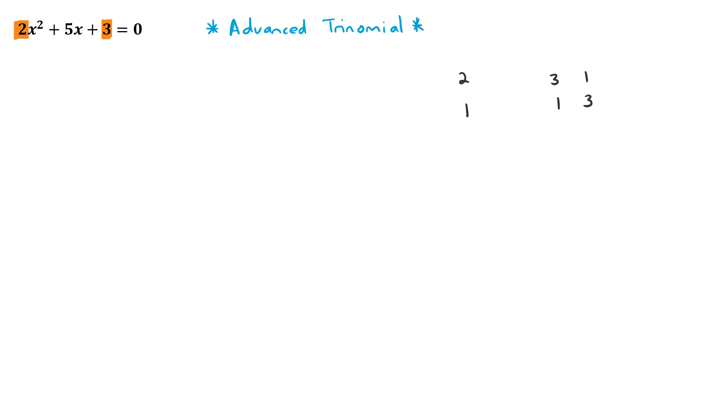Now this is called the cross method that we're going to use. And basically what you guys need to understand is that we need to multiply across the values like that and then add them so that we get that value in the middle. Okay? And then we can pick our factors by going across. So that would be one factor and that would be another factor. And I'll show you exactly what I mean in a second.